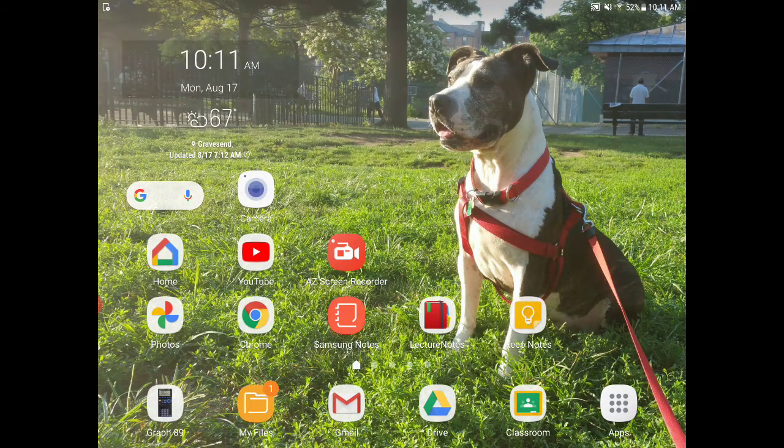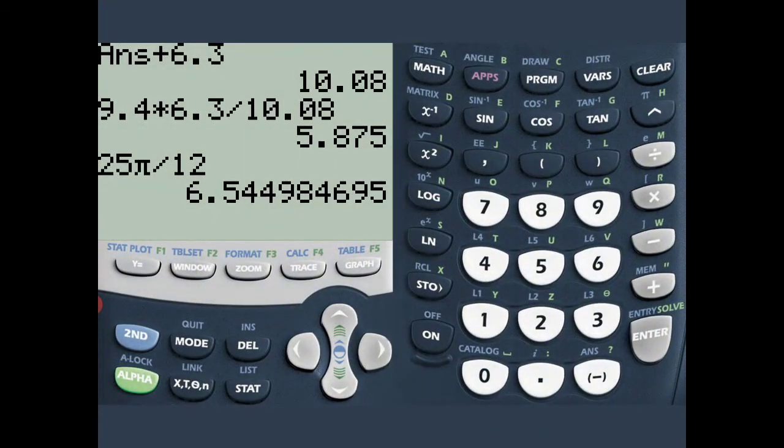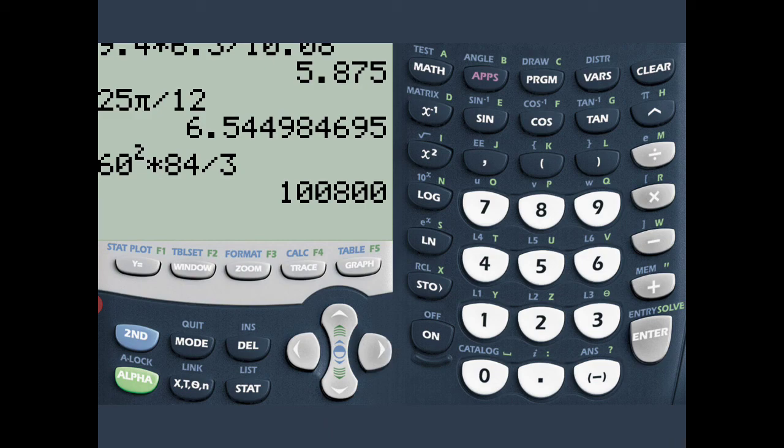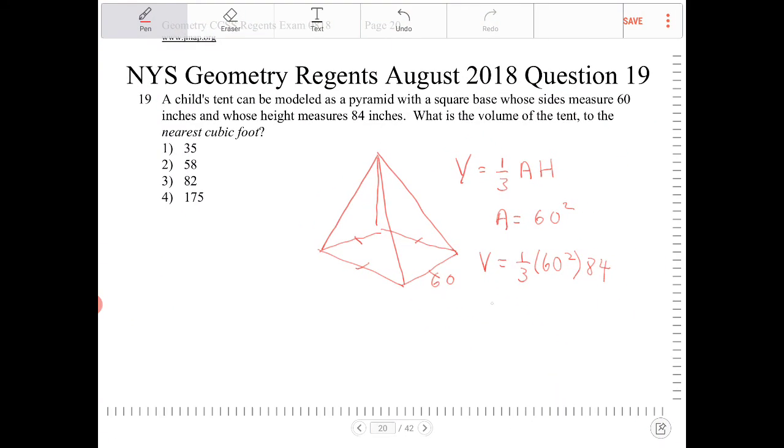So 60 squared times 84 divided by 3—that is 100,800.